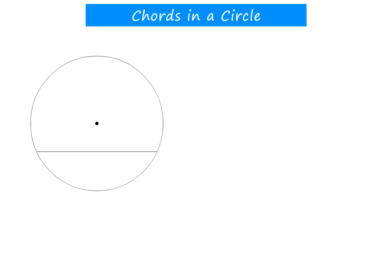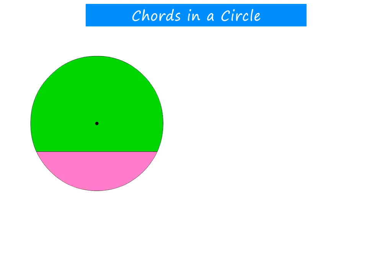In this lesson we are going to learn about chords in a circle. A chord is a line segment whose endpoints lie on the circumference of a circle. A chord divides a circle into two segments. The bigger segment is called the major segment and the smaller segment is called the minor segment.